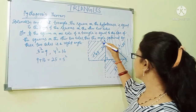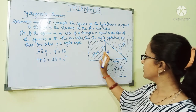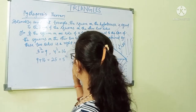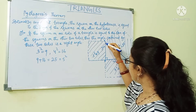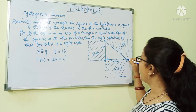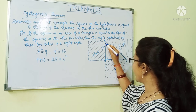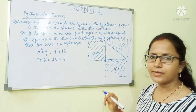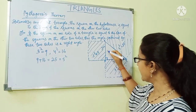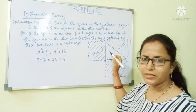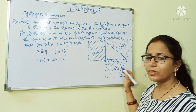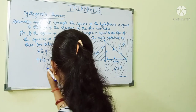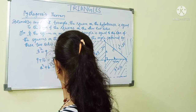Understood? So, the sum of the two areas will be equal to the area of this side. Now, you can see that AC is known as the hypotenuse and it is the greatest side of this triangle, because it is opposite to the 90 degree angle. If I consider this as A, this as B, and this as C, I can write A squared plus B squared equals C squared.